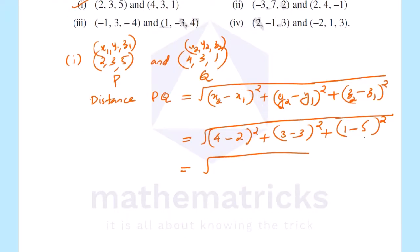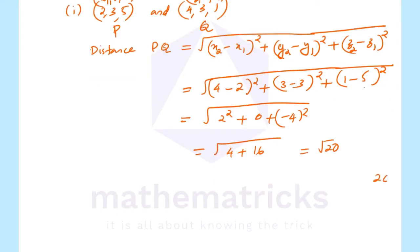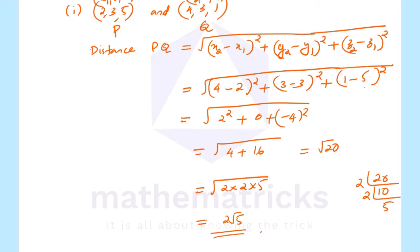So we get: (4 minus 2) squared, that is 2 squared; plus (3 minus 3) squared, that is 0; plus (1 minus 5) squared, that is minus 4 all square. That is equal to root of 4 plus 0 plus 16, equal to root 20. We factorize: root 20 equals square root of 2 into 2 into 5, that is equal to 2 root 5. So distance is equal to 2 root 5 units.